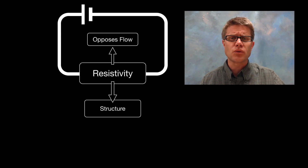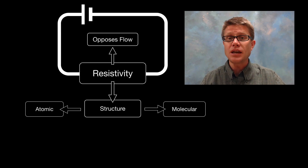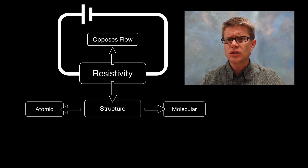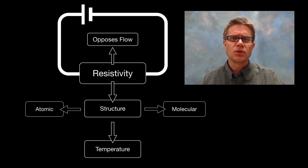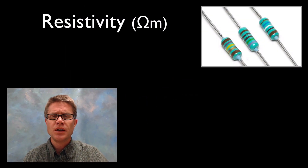What determines resistivity is the structure of the material itself — how the atoms and molecules are arranged. It's innate in the material; each material is going to have a different resistivity. One way we could change that is the amount of material, but another way is temperature. Since resistivity is based on atomic structure, as we change temperature we can change the resistivity as well.